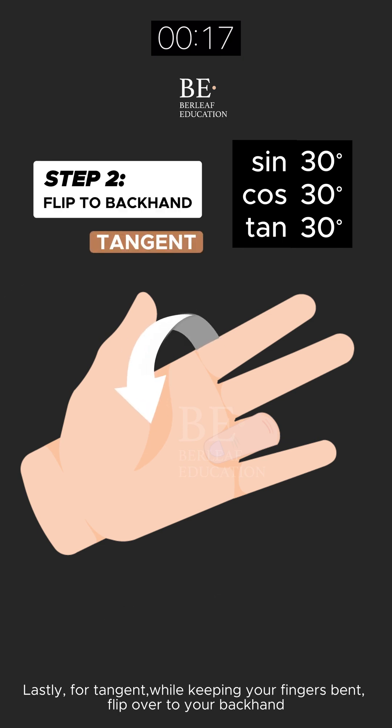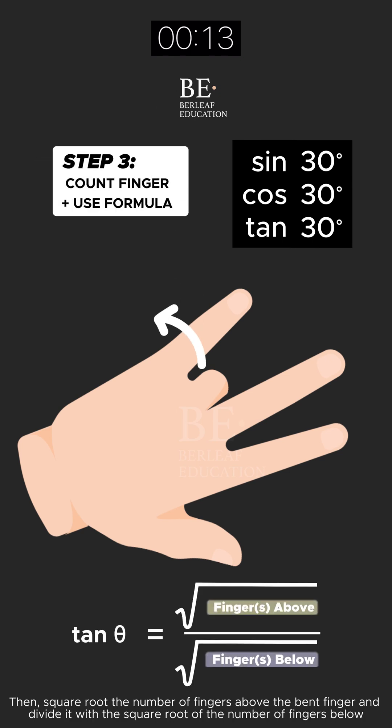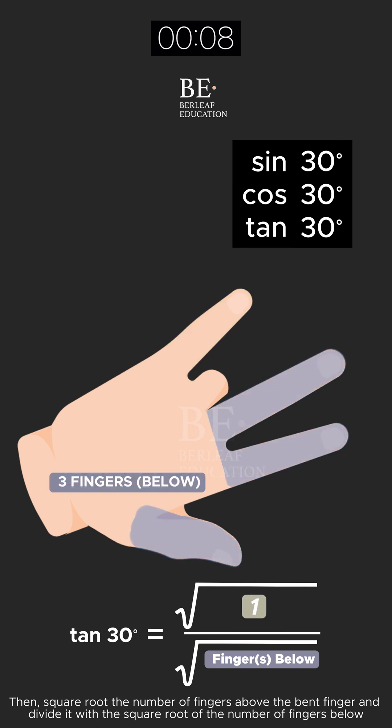Lastly, for tangent, while keeping your finger bent, flip over to your back hand. Then, square root the number of fingers above the bent finger, and divide it with the square root of the number of fingers below.